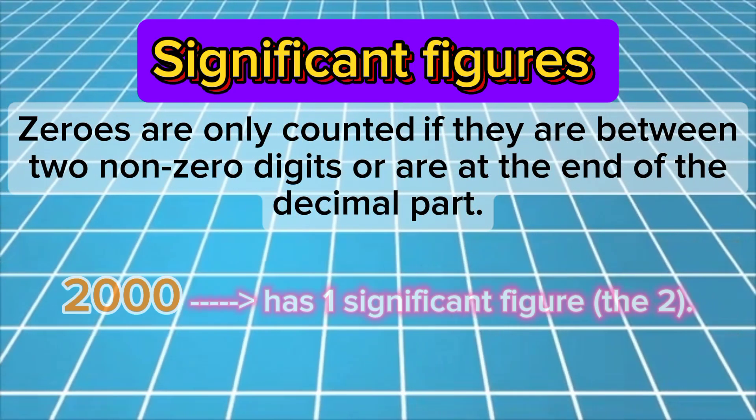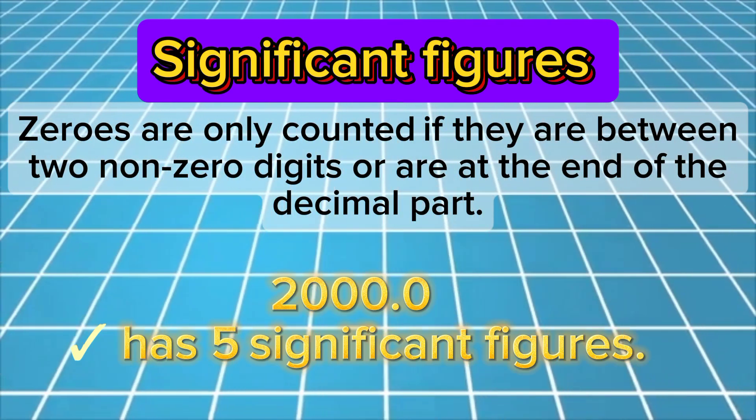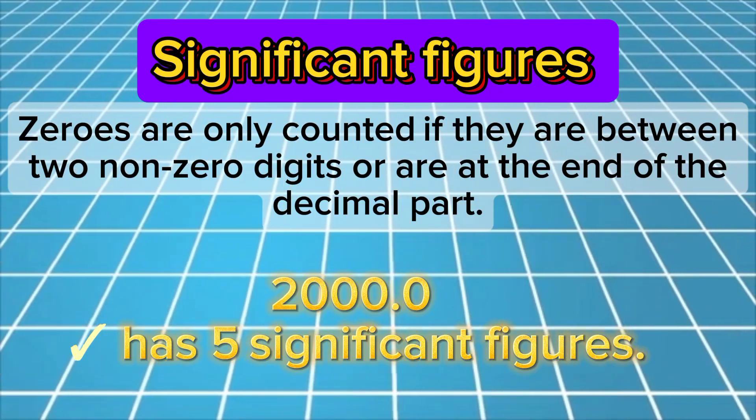For example, the number 2000 has one significant figure, the two, but 2000.0 has five significant figures.